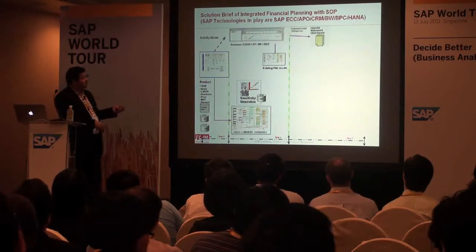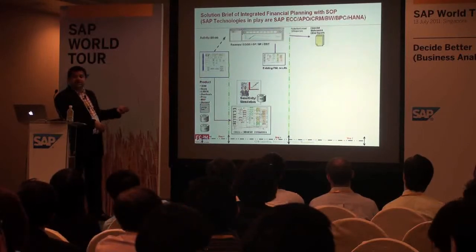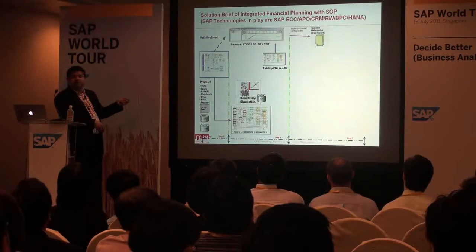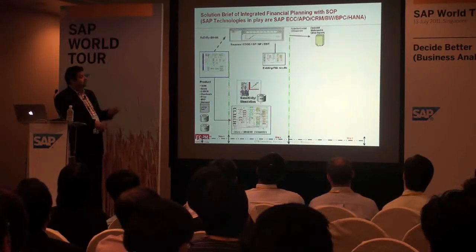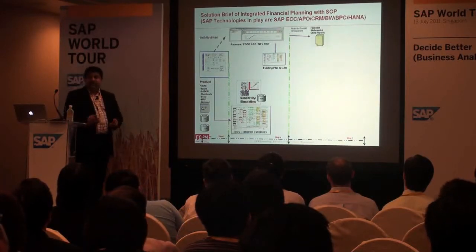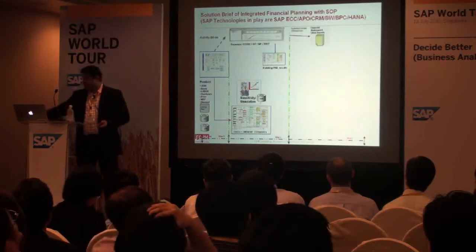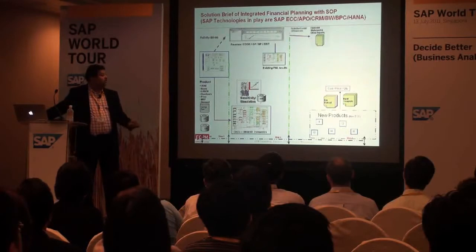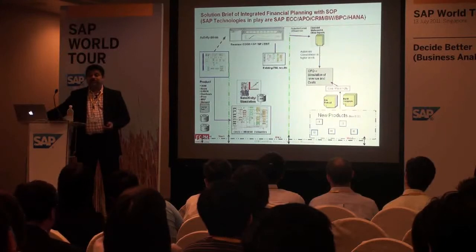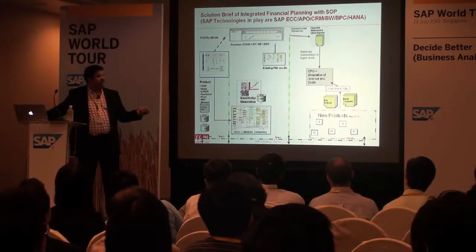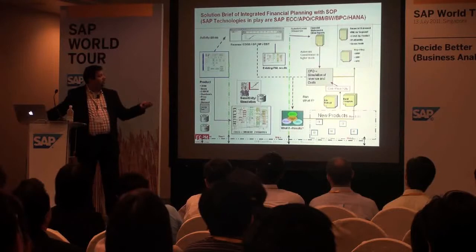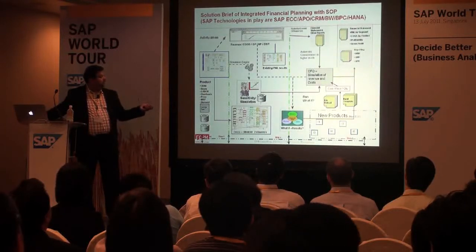We have products — BOM, routes, labor — the master data that exists on the ERP environment, kept in one place. Through activity-driven processes, we can build revenues, cost of goods sold, gross profits, and EBIT, getting our existing PNL to detail levels. We have our COGS, which are current estimates extracted from the ECC environment, and from there we build new products in our planning environment and take them across to a simulation environment for the CFO or finance team where cost, price, and quantity equations are maintained.